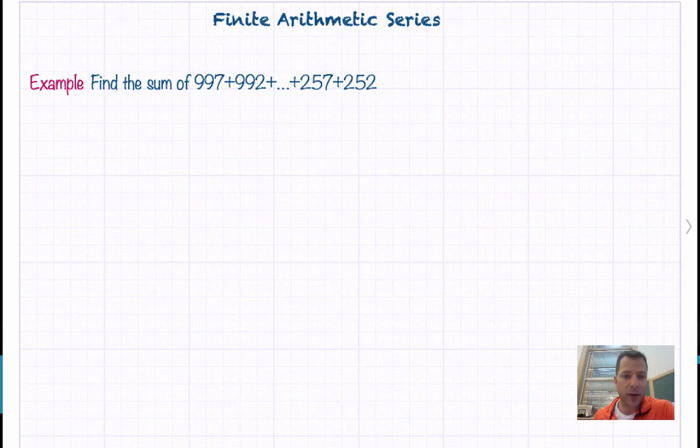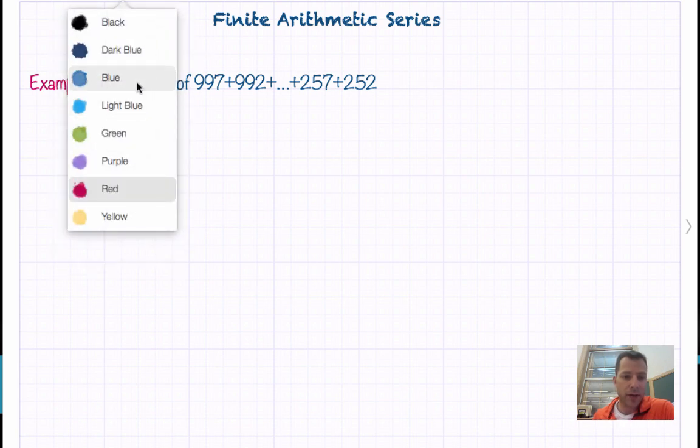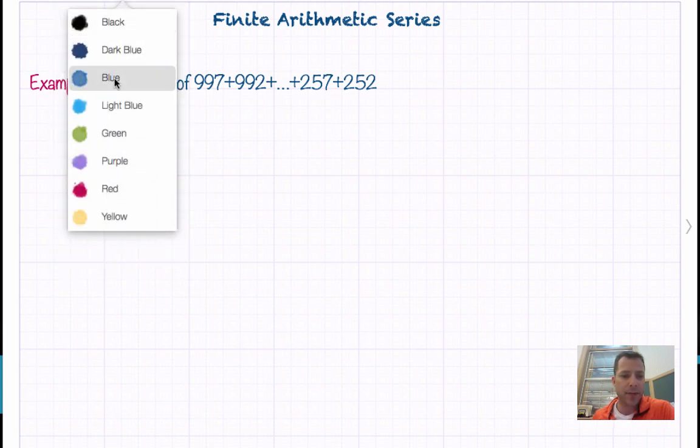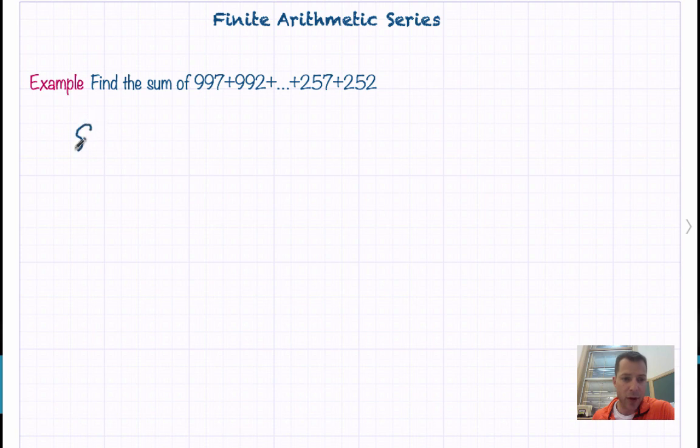So first we need to know the formula to find the sum of that arithmetic series. The sum of a partial finite series is S sub n equals n, which is the number of terms, times the average of the first term and the last term A sub n, all over 2.